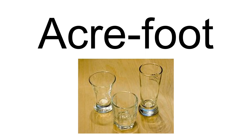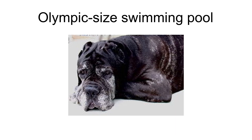An acre-foot is a unit of volume commonly used in the United States in reference to large-scale water resources, such as reservoirs, aqueducts, canals, sewer flow capacity, irrigation water, and river flows. It is defined by the volume of 1 acre of surface area to a depth of 1 foot, 43,560 cubic feet, which is about 1,233.48 cubic meters, 325,850 U.S. gal, 271,330 imp gal. For larger volumes of liquid, one measure commonly used in the media in many countries is the Olympic-sized swimming pool. A 50 m × 25 m Olympic swimming pool, built to the FINA minimum depth of 2 meters, would hold 2,500 cubic meters, 2,500,000 L, 550,000 imp gal, 660,000 U.S. gal, 2.0 acre-ft.